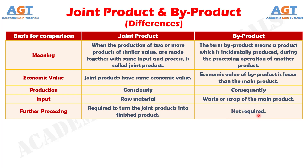Both joint products and by-products are produced with the same raw materials and manufacturing process, but they are different concerning the purpose. While the joint products are the primary results of operations, the by-product is a secondary outcome of the process.